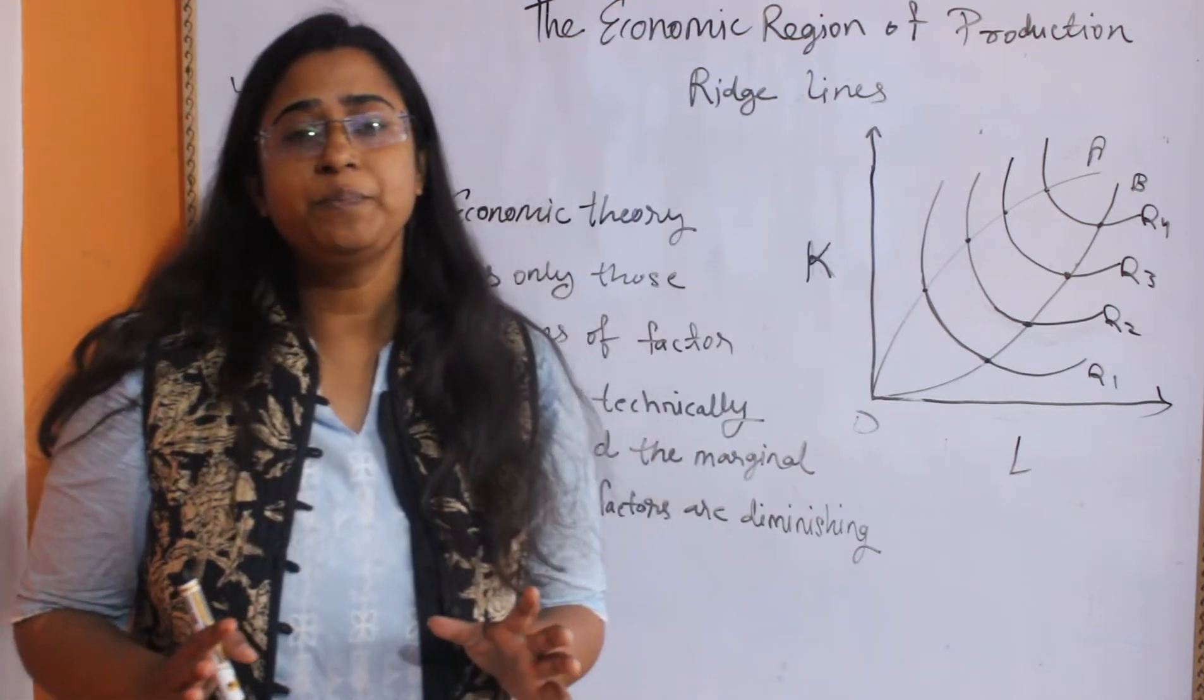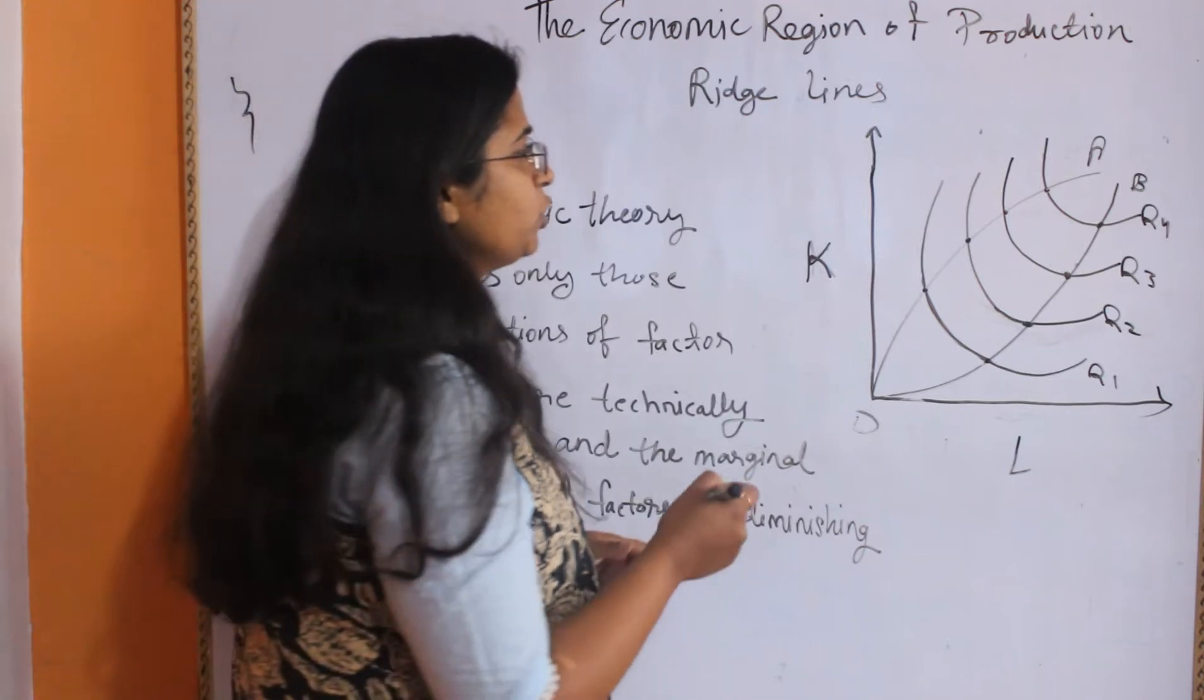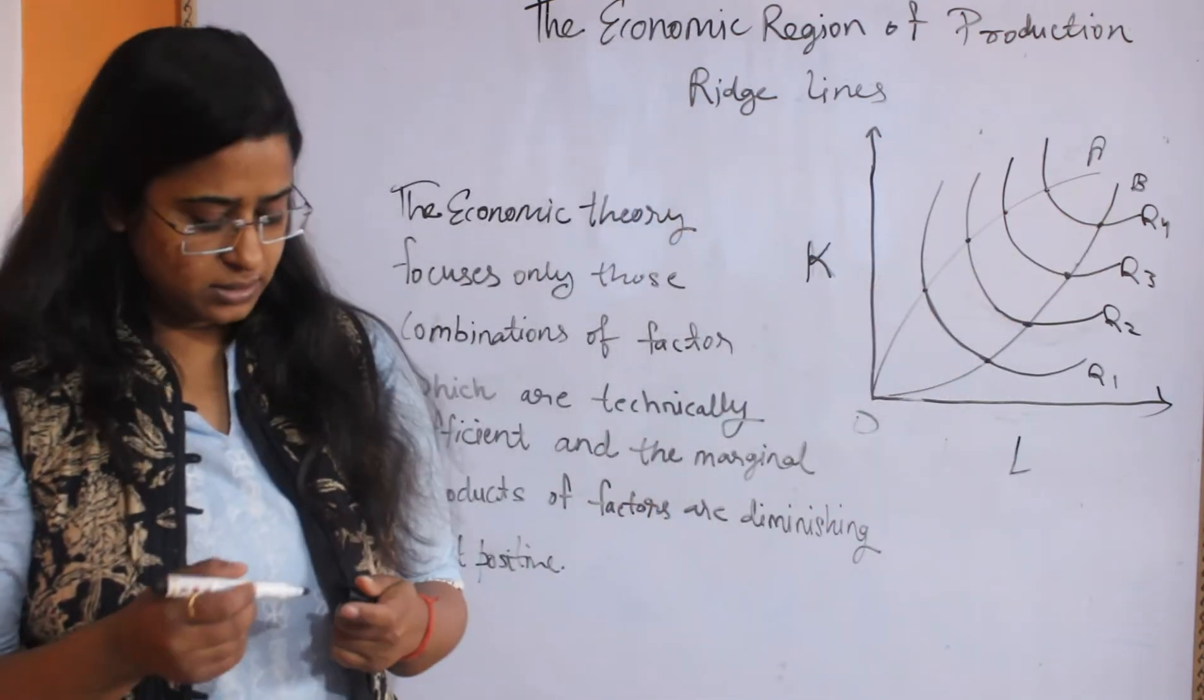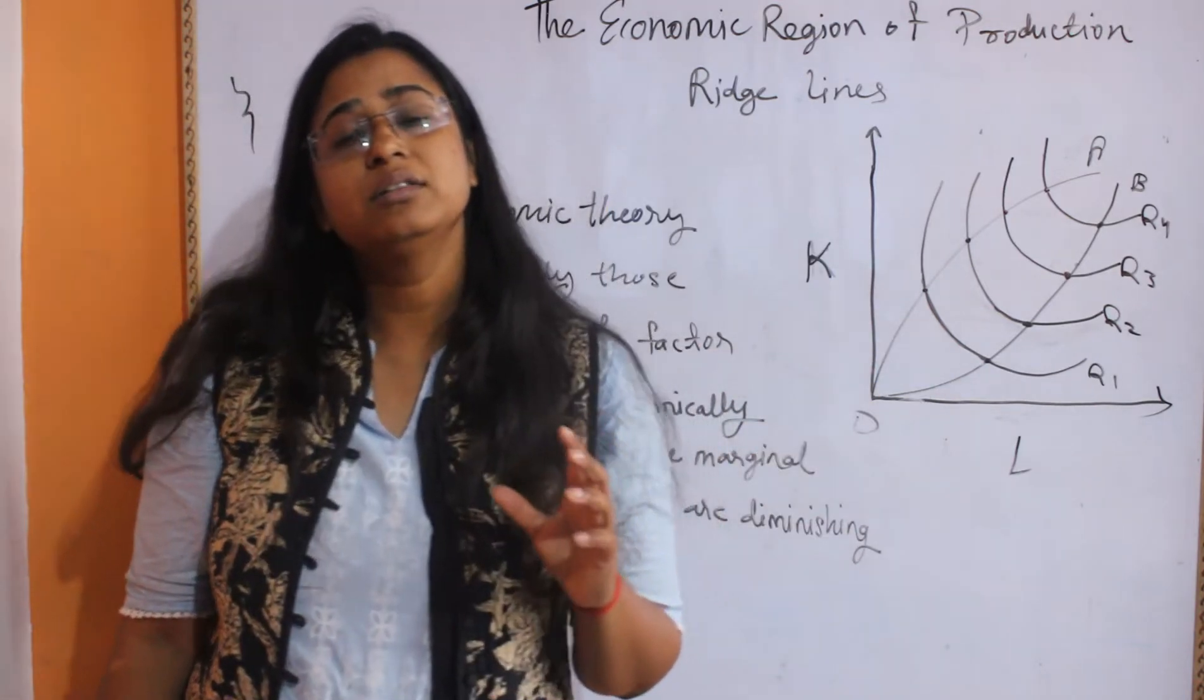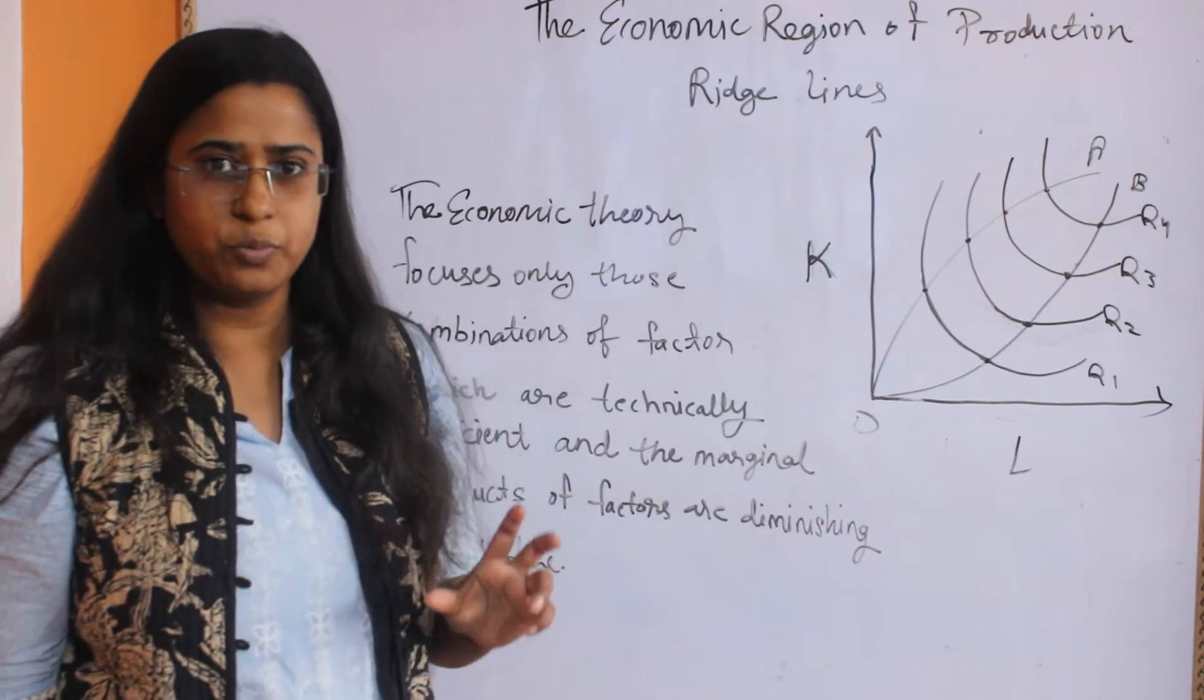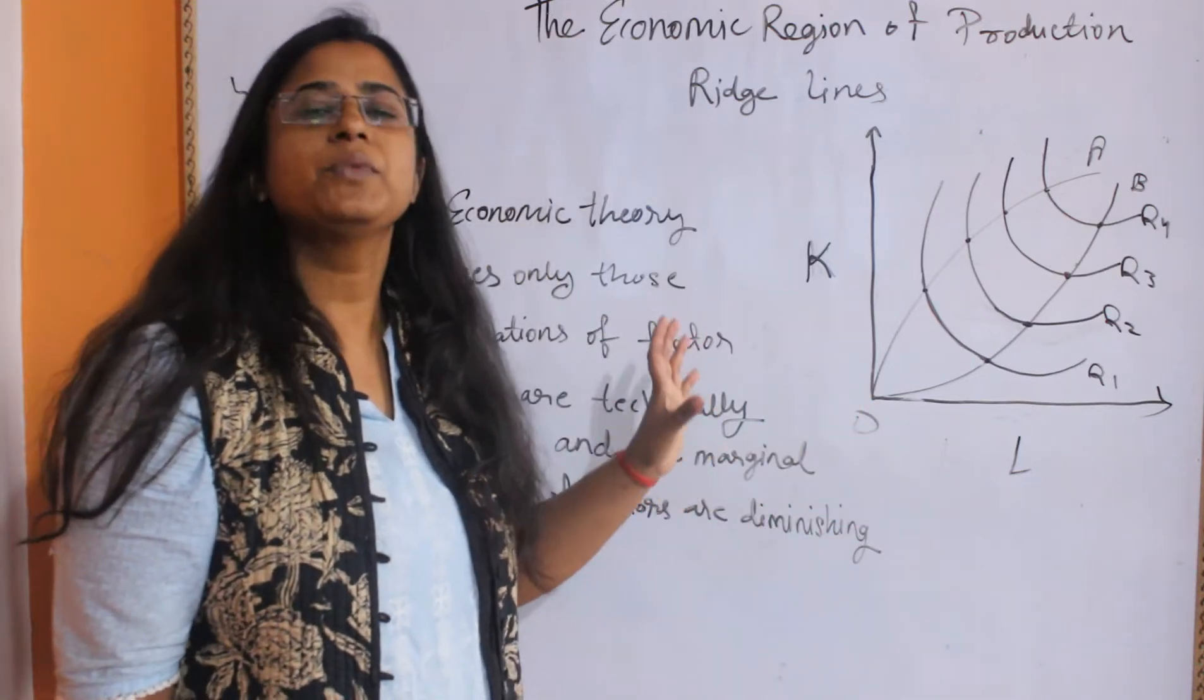This is what you have to understand while discussing the concept of ridge lines. You can see two rays here, OA and OB. These lines, OA and OB, are the ridge lines which encircle the efficient range of efficient combinations of factors of production which give the same level of output at the particular isoquant.